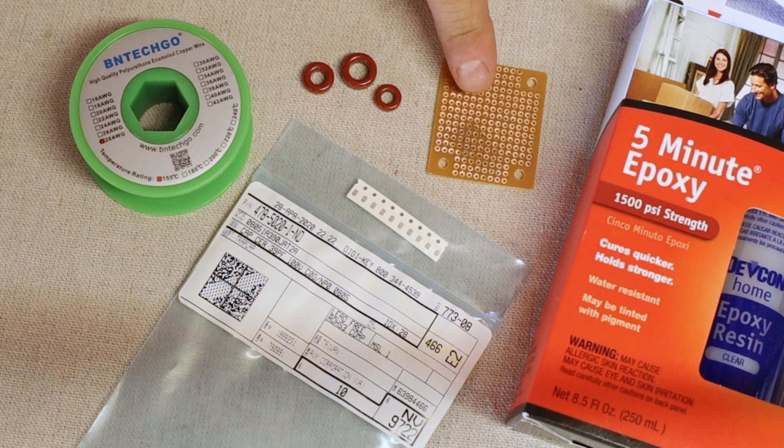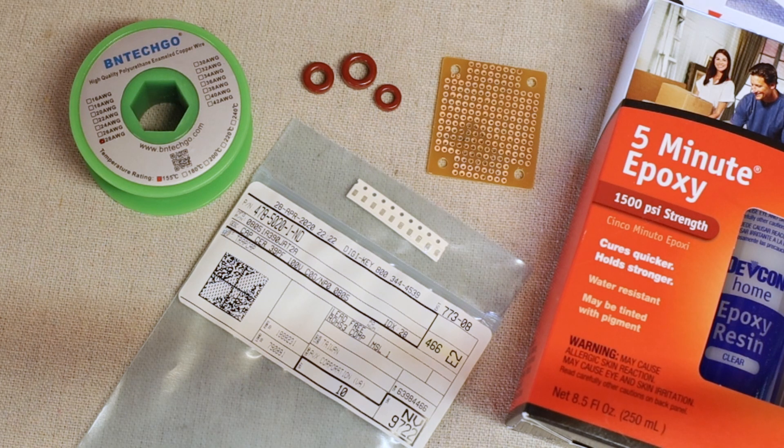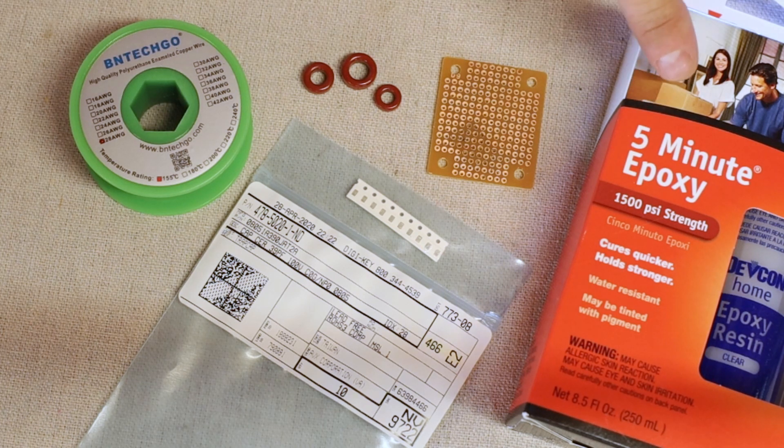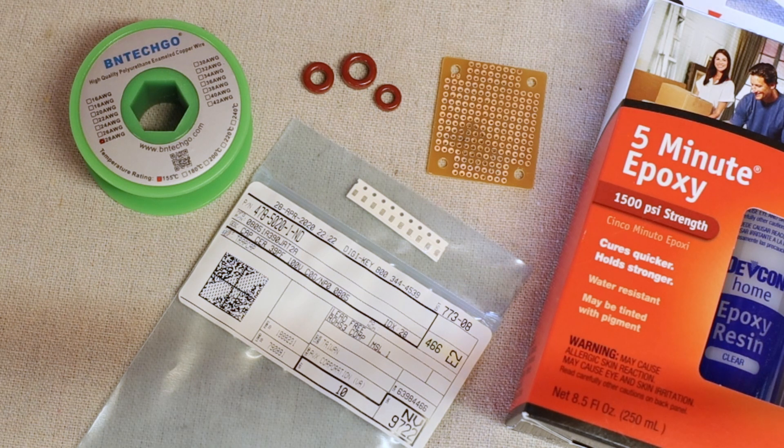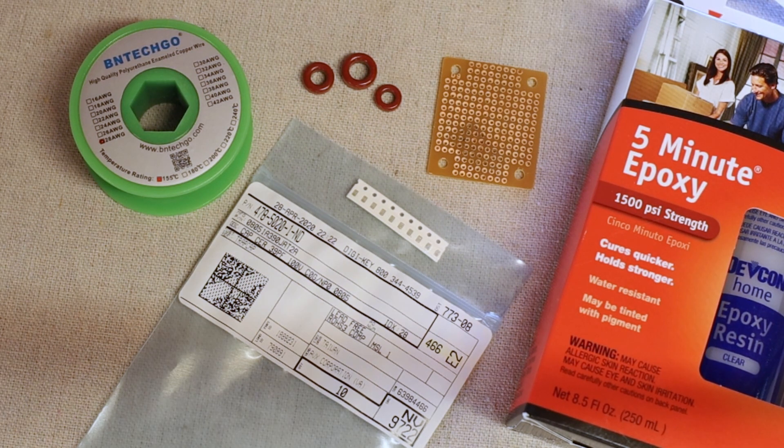You're also going to need some of this perforated PC board material that you're going to build your traps on. That acts as a holder for the capacitor and strain relief for the wires attaching to it. Then finally, I always like to pot these with 5-minute epoxy to hold all the wires in place and make sure the tuning doesn't get messed with as you proceed. The only other thing you need that I'm not showing here is your heat shrink tubing to protect the trap when you're done. I've included some shopping list links in the description below.